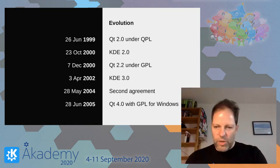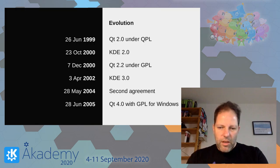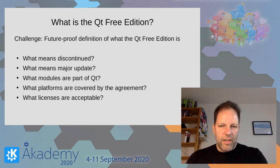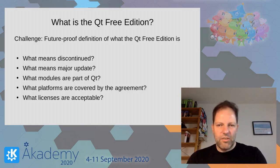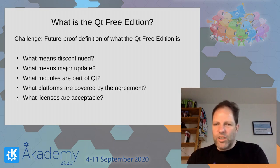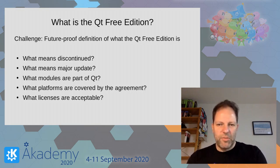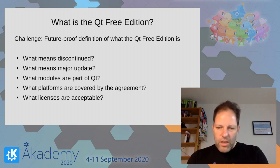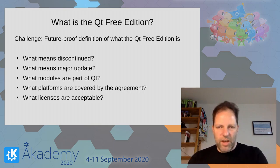In 2005, Qt 4 was also released under the GPL, but at that time it wasn't yet covered by the agreement. One of the ongoing challenges with the agreement is defining what the 'Qt Free Edition' actually means — what 'discontinued' means, what 'major update' means, what is part of Qt, what to do with deprecated modules. Also, what platforms are covered: at the time of writing, embedded platforms weren't around, so nobody thought about mobile phones or Windows. What licenses are acceptable, and what happens with GPL version 3 — this always needed discussion and continuous updating of the agreement.